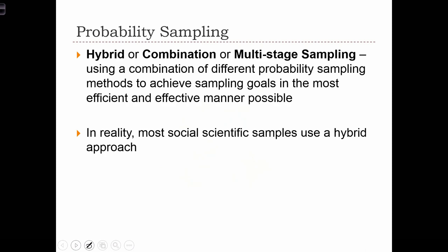We also have hybrid, combination, or multi-stage sampling. In these methods, we use a combination of different probability sampling methods to achieve sampling goals in the most efficient and effective manner possible. In reality, most social science samples use a hybrid approach.